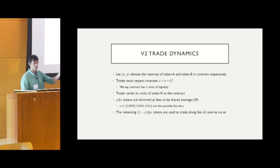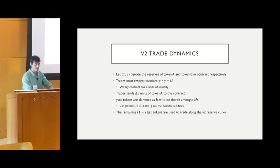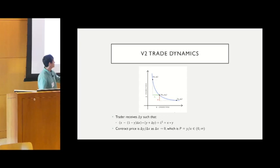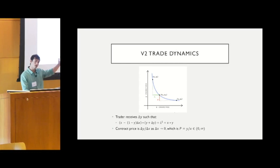When traders interact with the contract, they send amounts of tokens to the contract, which moves the reserves along this constant product curve. Fees are skimmed and given to liquidity providers as part of the earnings they make over a time horizon. Traders are moving points along this curve for a given fixed amount of liquidity, and along the way fees are accrued for liquidity providers.